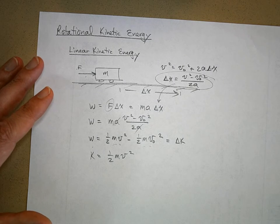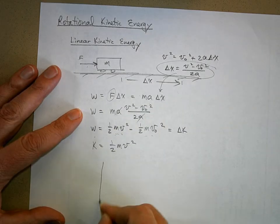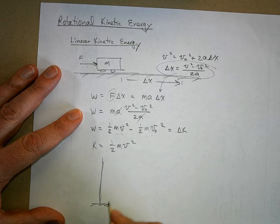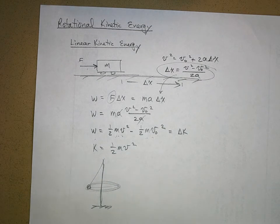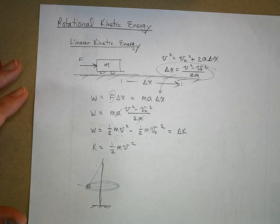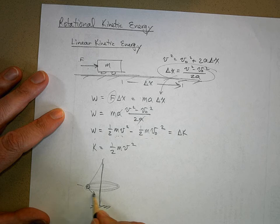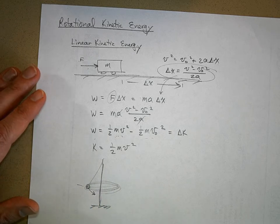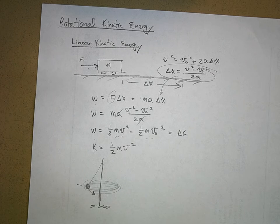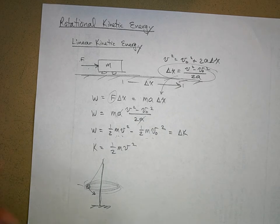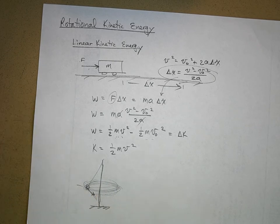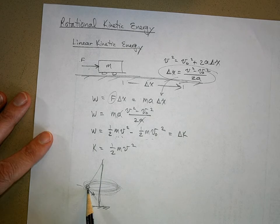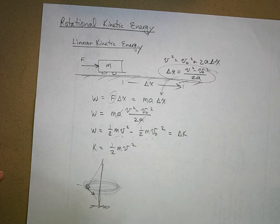Here's a pole in the ground, and a tetherball swinging in a circle. When you were a kid you'd hit the ball tangentially to the circle so it would go faster. If you hit it toward or away from the pole it wouldn't spin — it would just hit the pole. But hitting it tangentially transfers energy into the ball and makes it rotate. That's called torque — torque is how you make things spin or change the way things spin.